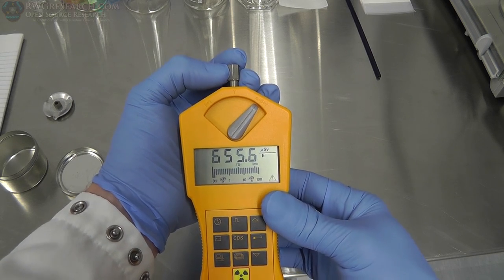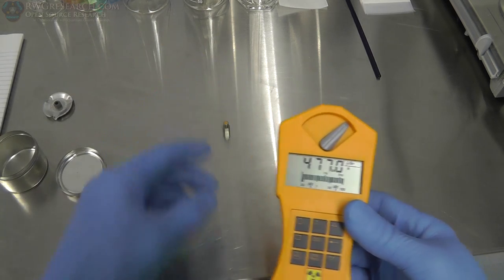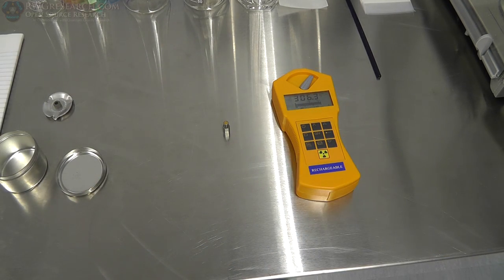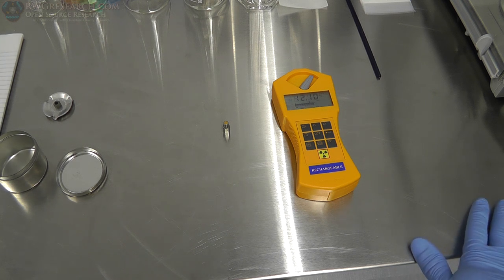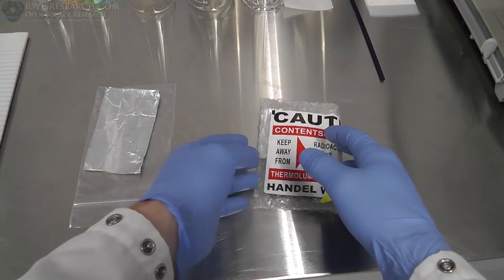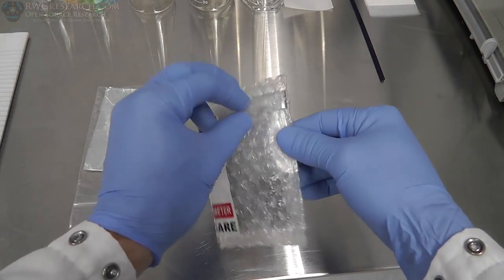So we're going to be using that as our source to etch this plastic or to create tracks in this plastic so that we can really see what we're looking for under the microscope. Alright, so let's go ahead and look at what we've got.